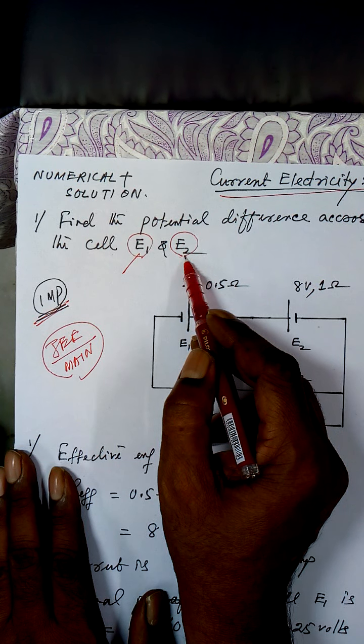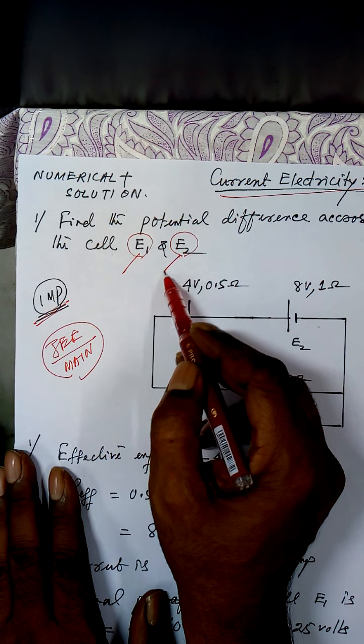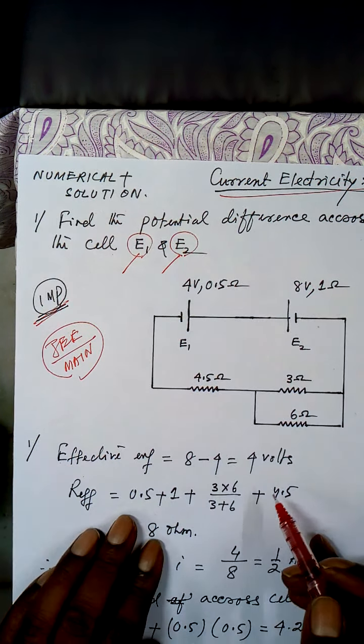Now another important numerical for your JEE Main — current electricity problem 20. Find the potential difference across the cells E1 and E2. Note that E1 and E2 are the names of the cells, not their EMF values.